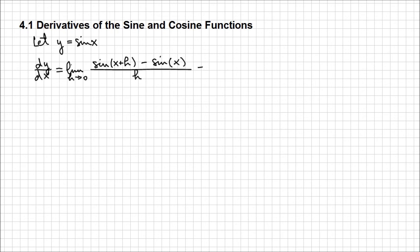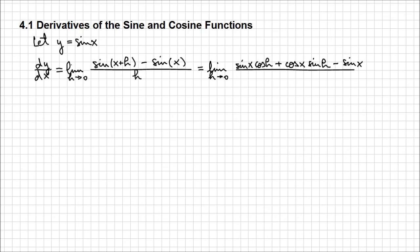We're going to start by expanding sine of x plus h. As we know, we have a formula for that. The limit as h approaches 0 of sine of x plus h becomes sine of x cosine of h plus cosine of x sine of h, minus sine of x, all over h. We notice that we have a common factor — we can factor out sine of x.